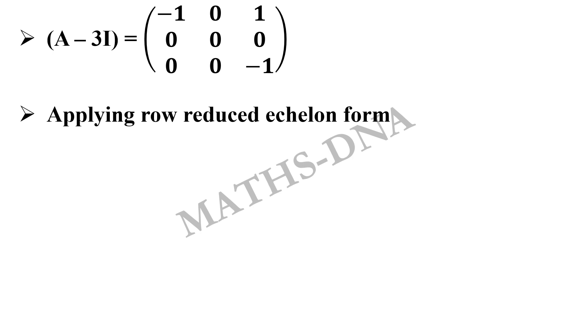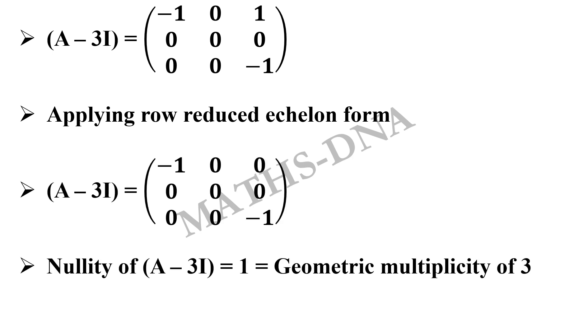Then apply the row reduced echelon form and then find the nullity of that A minus 3I of the remaining matrix. Now here the nullity of A minus 3I is 1 which is nothing but the geometric multiplicity of 3. So algebraic multiplicity of 3 is equal to the geometric multiplicity of 3.